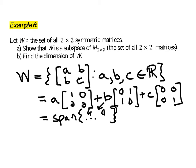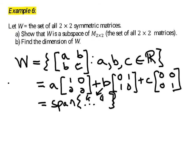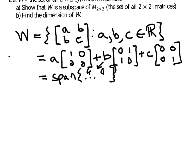Now remember that the dimension of W is the number of vectors in any basis of W. So to find the dimension, we need to find a basis for W. Now we have a spanning set. So remember,